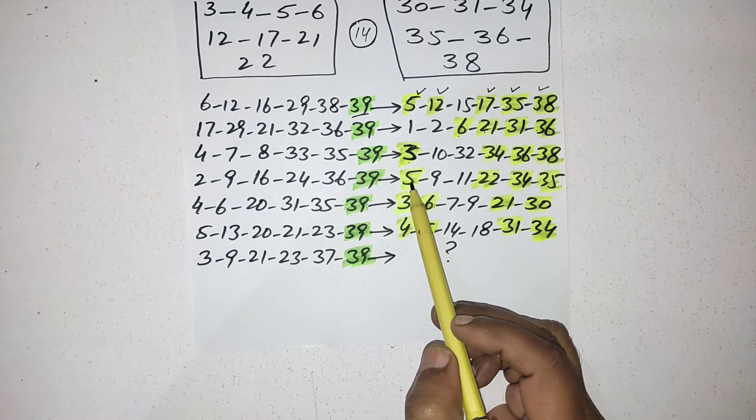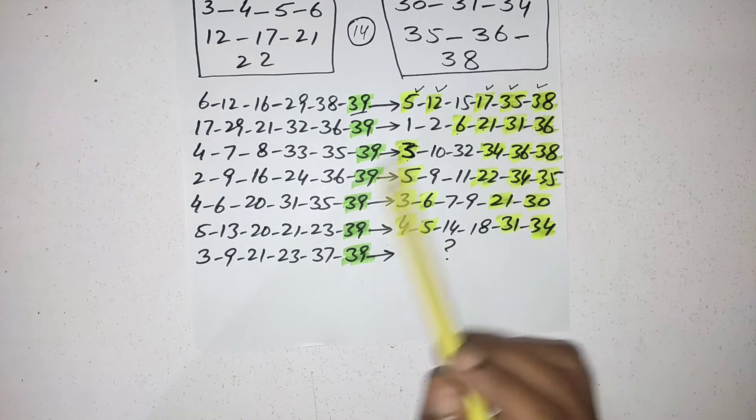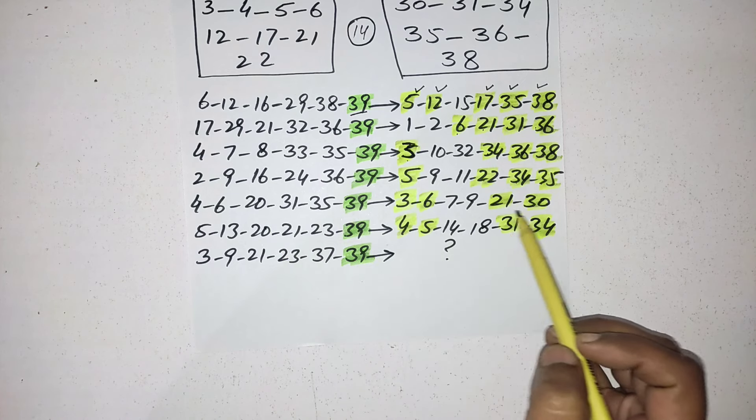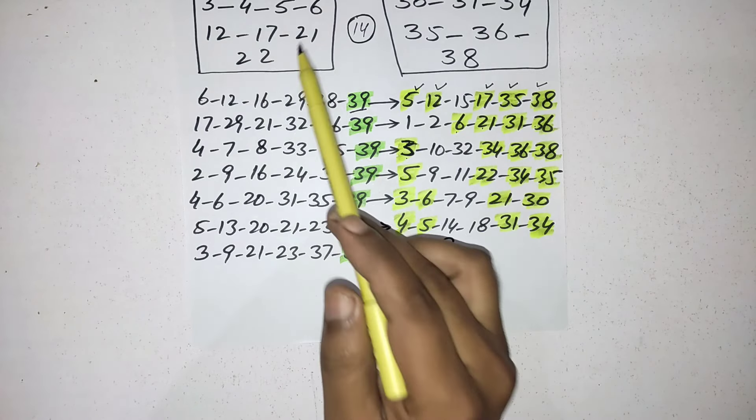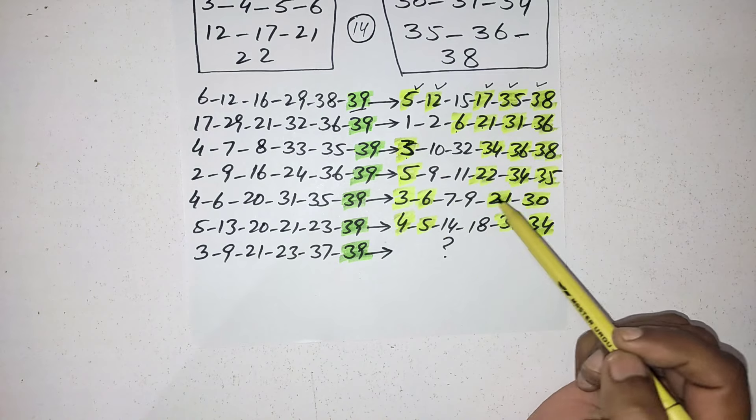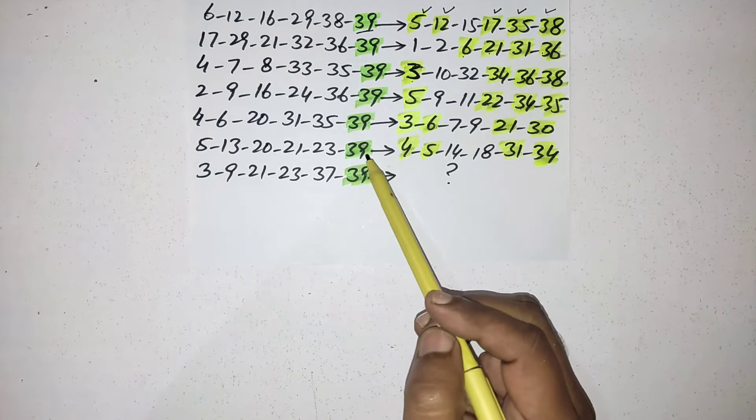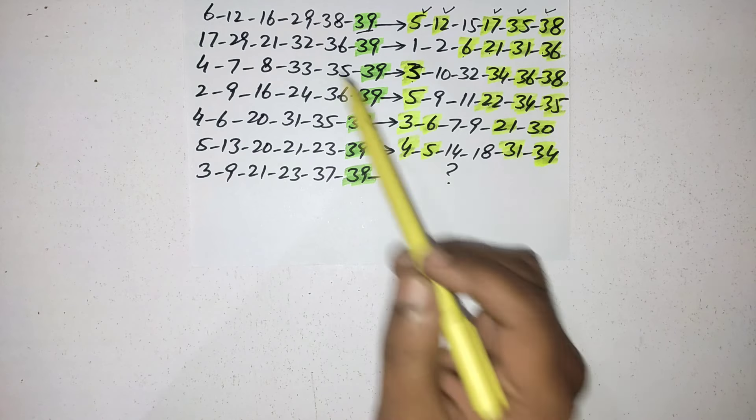In fourth time, again four numbers, four numbers were made from here. Fifth time you can see again four numbers were made from these numbers. Three, six, and 21 came from here and 30 number came from here.